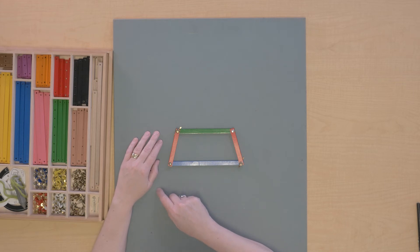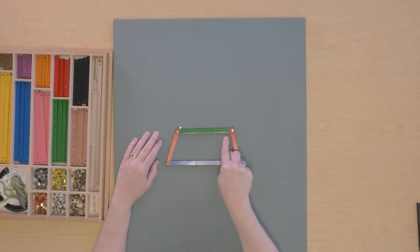So a trapezoid has two bases. It has the longer one that's the major base and the shorter one that's the minor base.